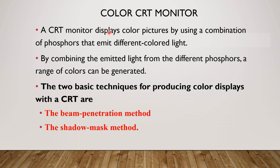A color CRT monitor displays color pictures by using a combination of phosphors that emit different colored lights. An important component is the phosphor-coated screen. It has different properties like resolution, aspect ratio, and persistence.